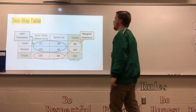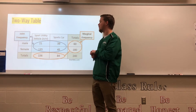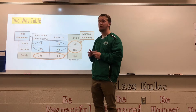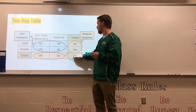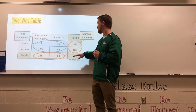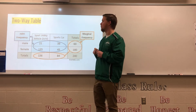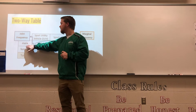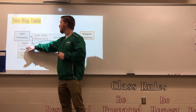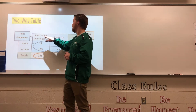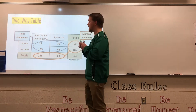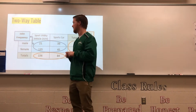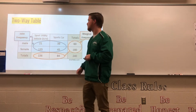I want to make sure we know how to read this table. The number in the bottom right-hand corner is your overall total — the total number of people taken into account in this data set. This two-way table looks at two different data from the same source: gender (male or female) and whether they drive an SUV or a sports car. The inside four boxes are joint frequencies; those are just the individual entries. The outer totals are your marginal frequencies.